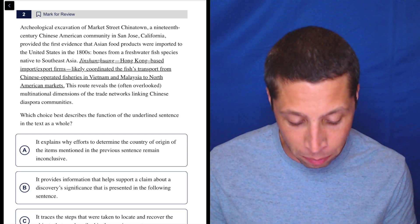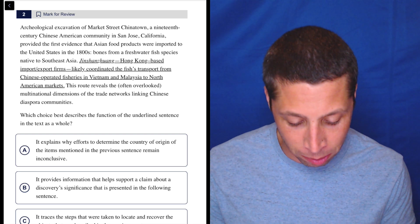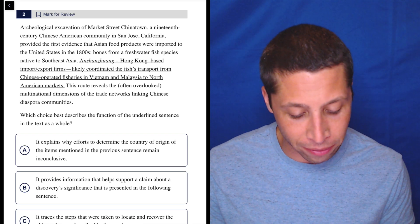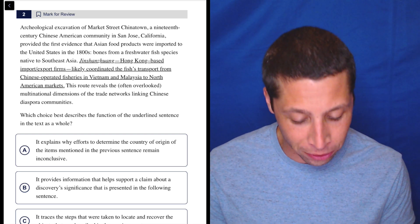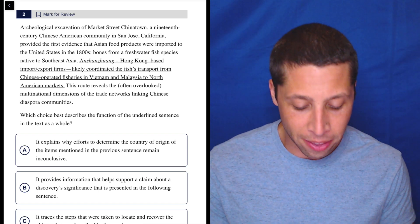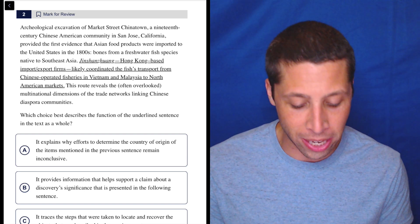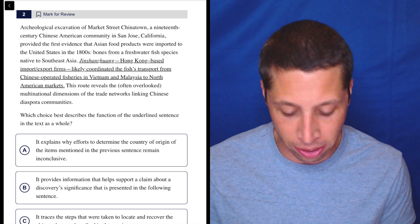Hong Kong-based import expert firms likely coordinated the fish's transport from Chinese-operated fisheries in Vietnam and Malaysia to North American markets. This route reveals the often overlooked multinational dimensions of the trade networks linking Chinese diaspora communities.